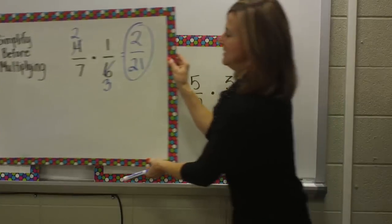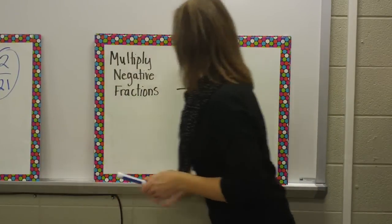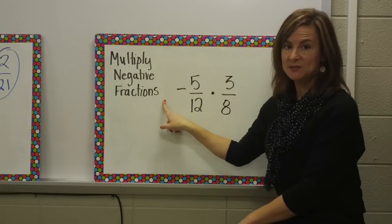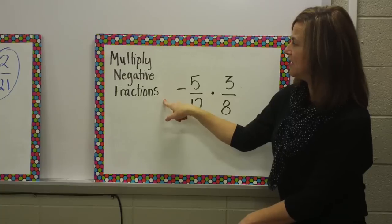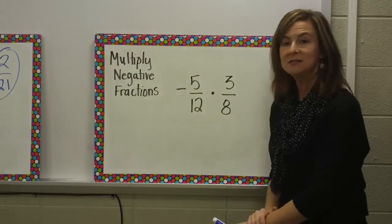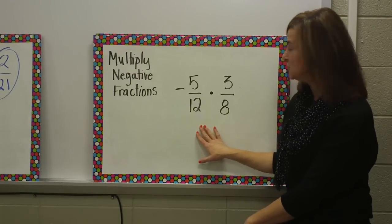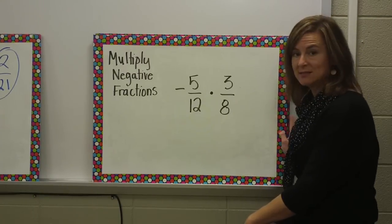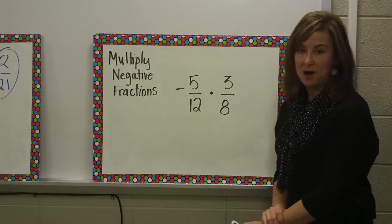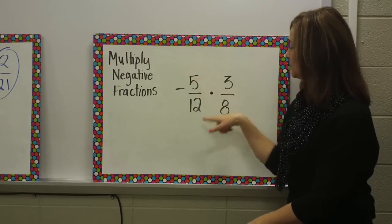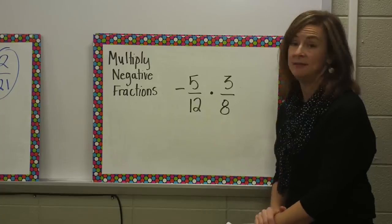The next example I want you to write down is when we multiply with negative fractions. Please, on your notes page, write down multiply negative fractions, and then copy this problem down. Negative five-twelfths times three-eighths. In this problem, we can start by looking at our cross-products to see if I can simplify.